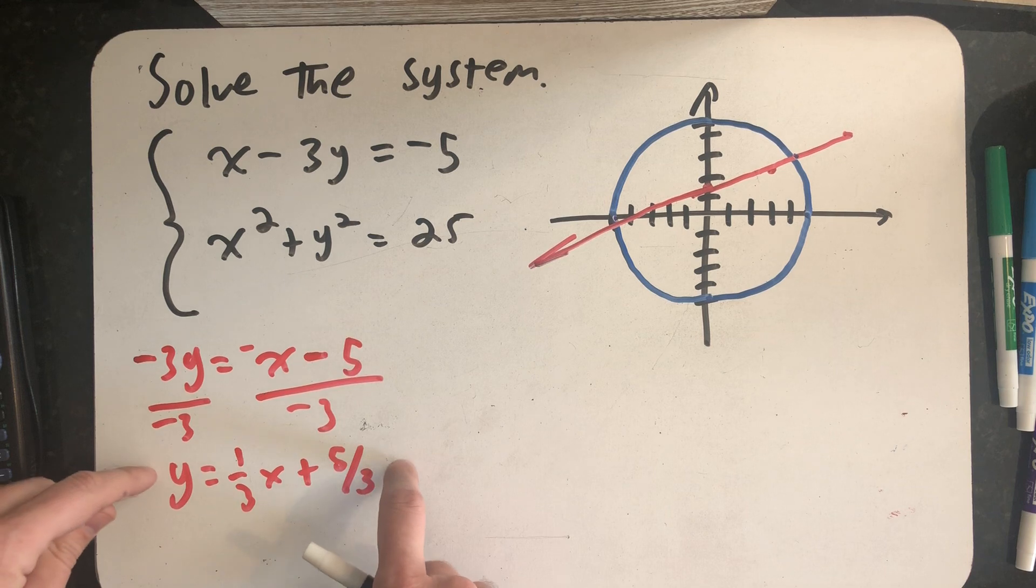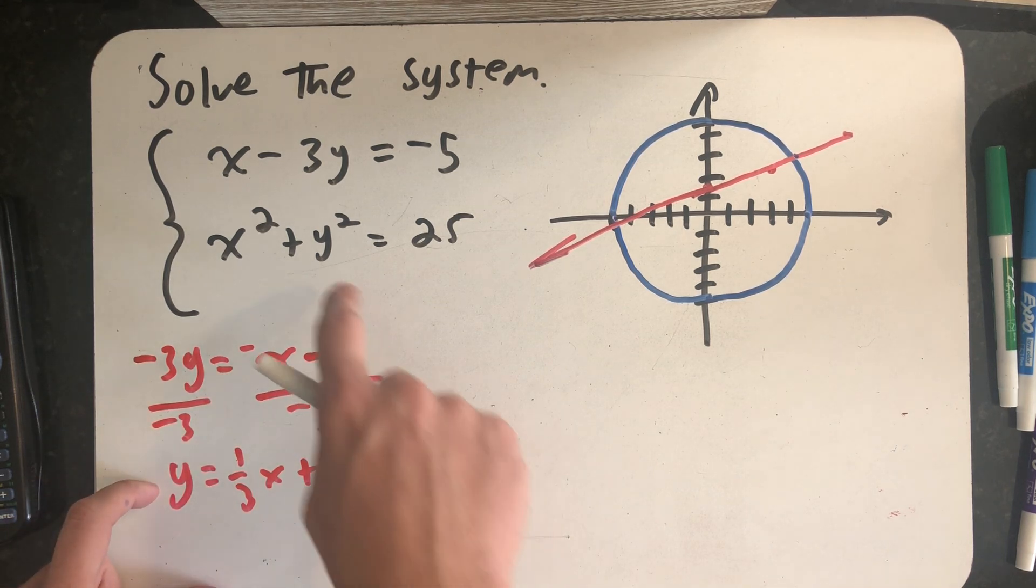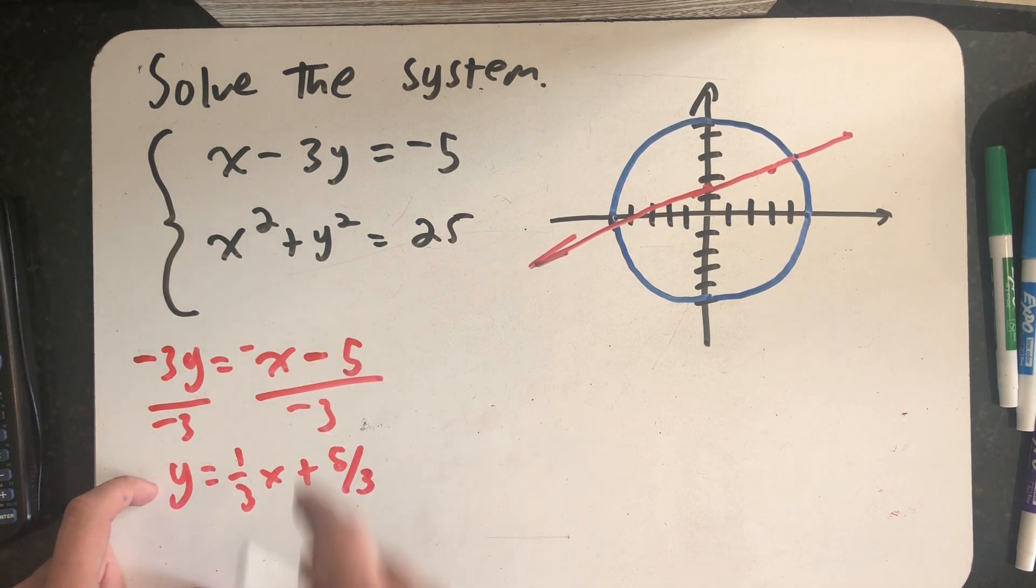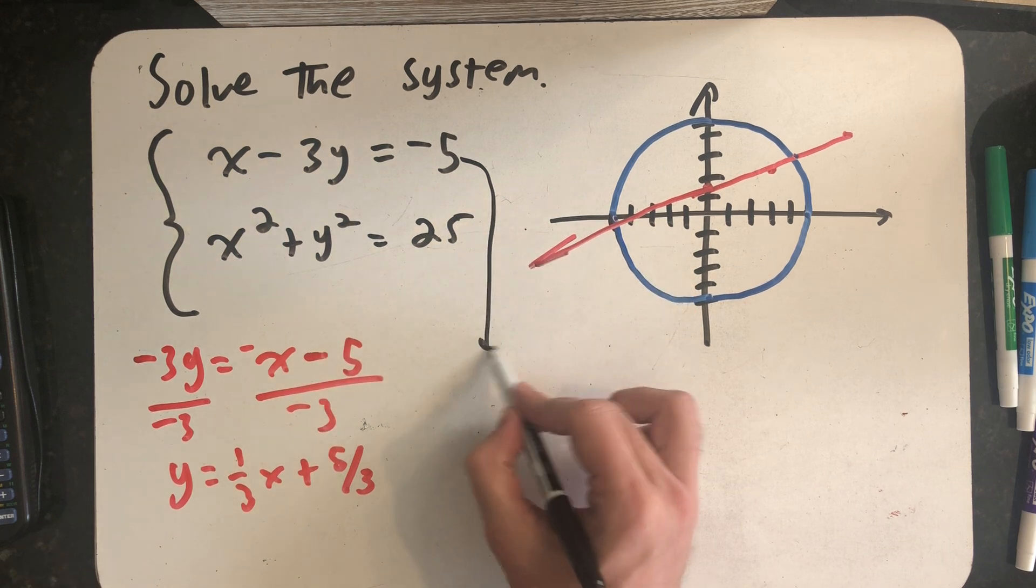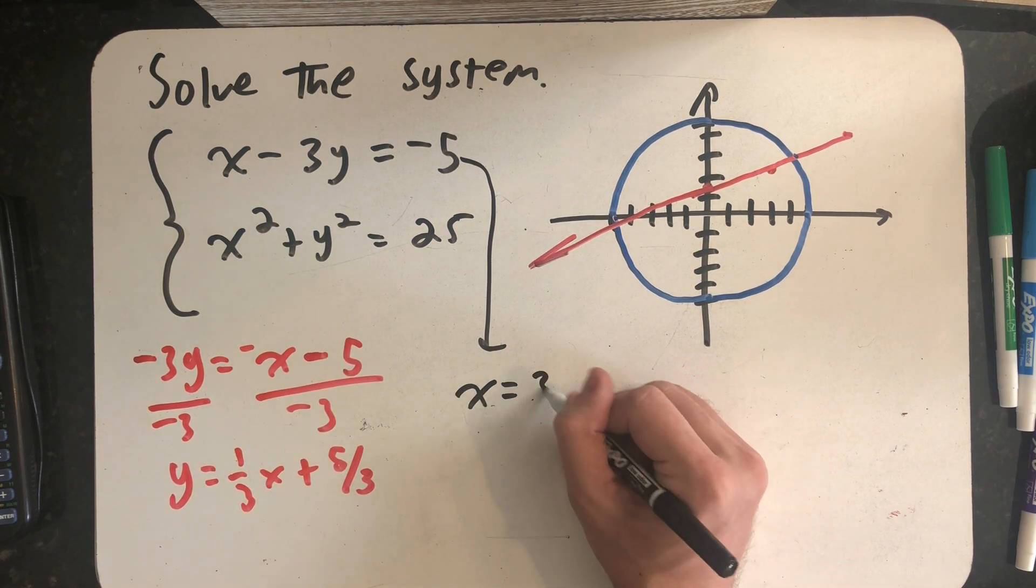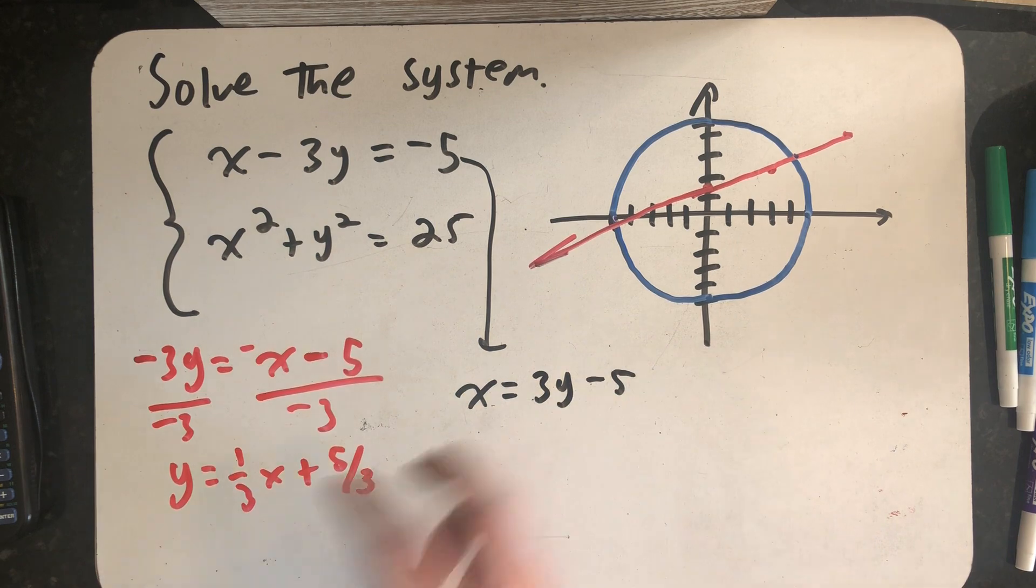Well, fortunately, when I went to graph it, I've already gotten y by itself. So I might try plugging that in there. But I actually think it's an easier approach on this problem to take this top equation and get x by itself. Both ways will work. You can do it either way.